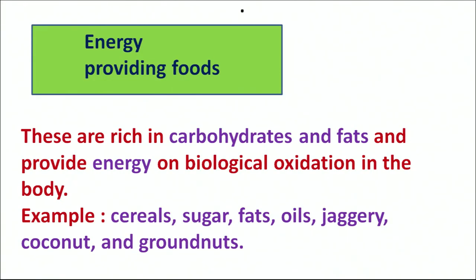Energy-giving foods include carbohydrates and fats. As the name suggests, their basic purpose is to provide energy to the body through biological oxidation. Examples are cereals, sugars, fats, jaggery, groundnut, coconut, etc.